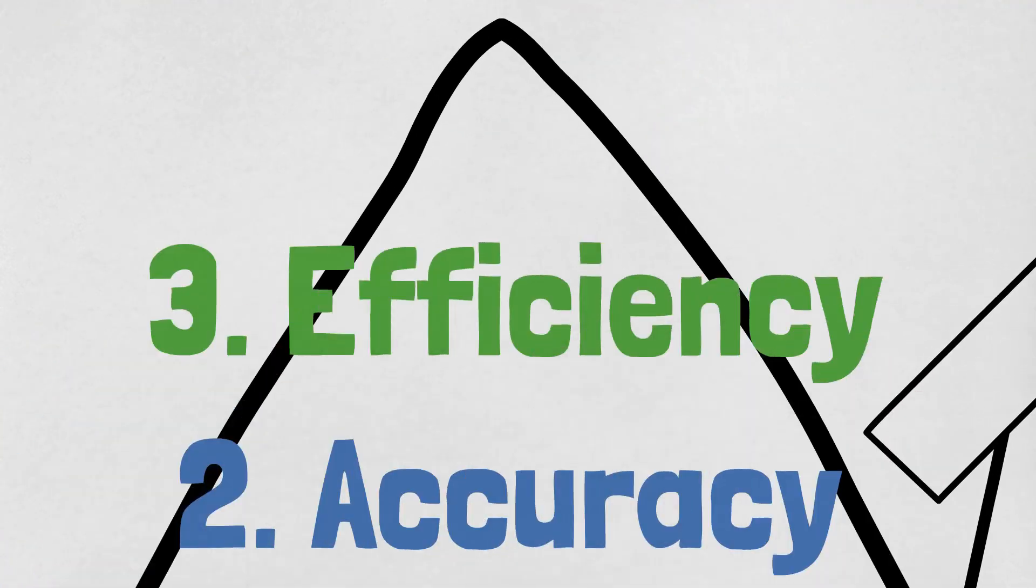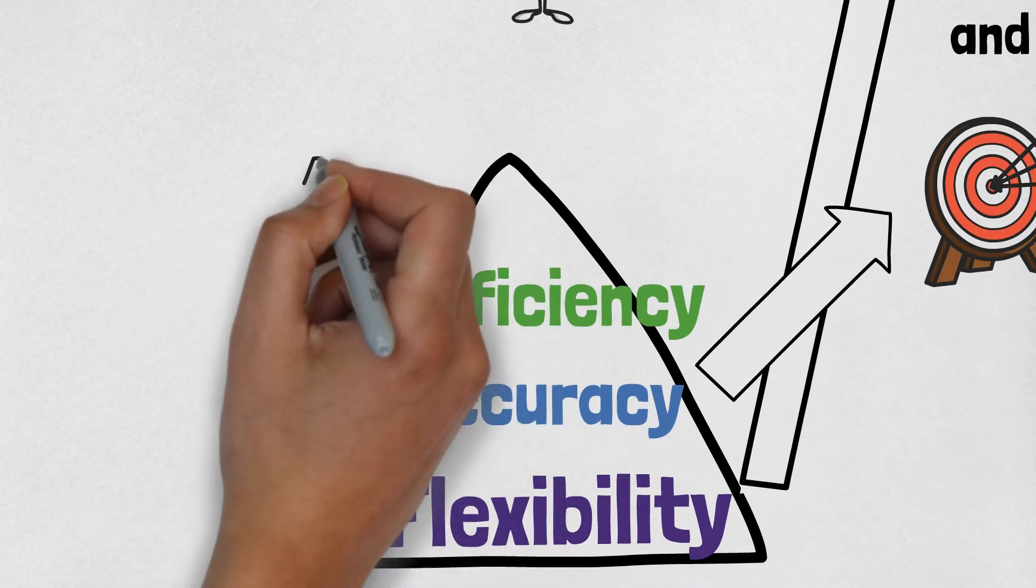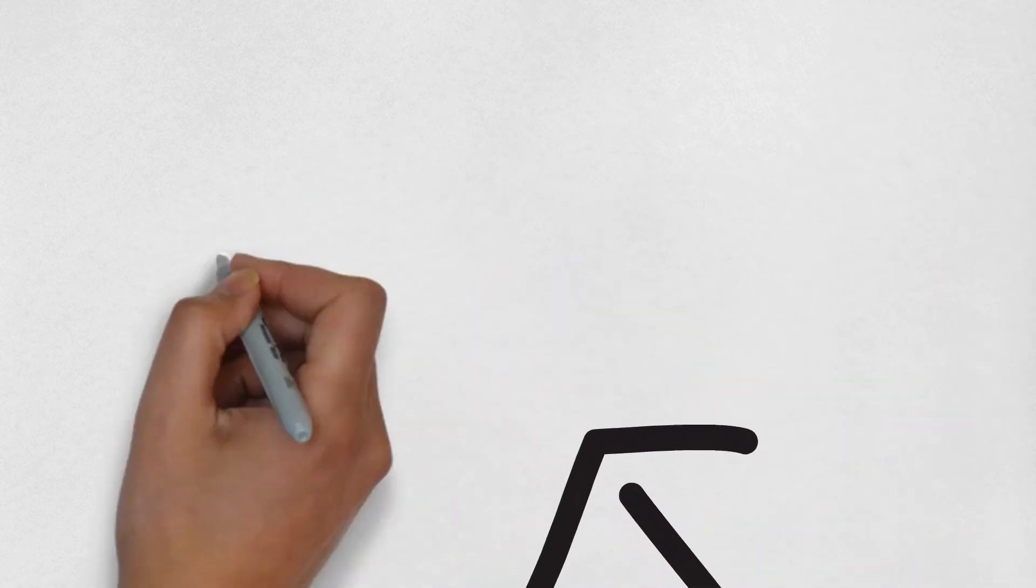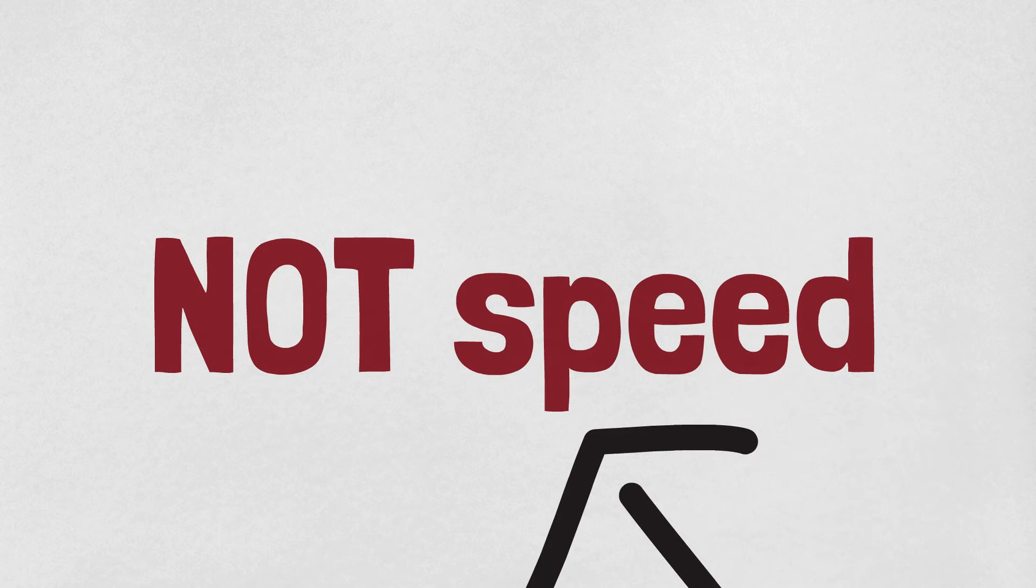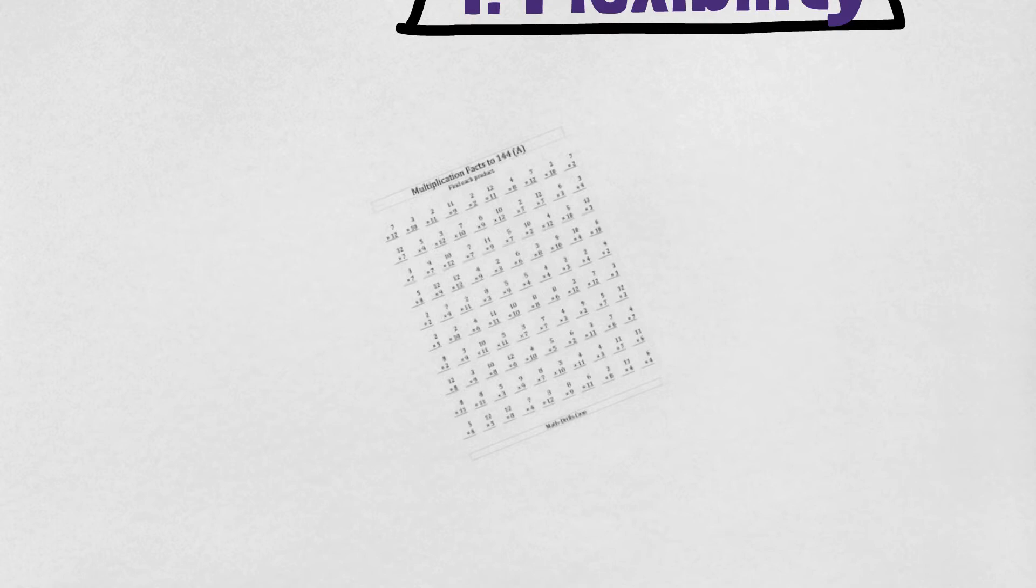The final step of fluency is efficiency. Notice how I didn't say speed. Though students will develop speed over time, efficiency does not equate to being fast. In the past, this may have been interpreted as something like this.